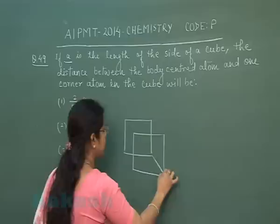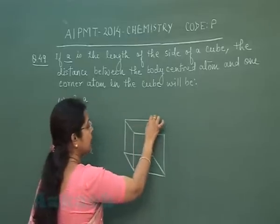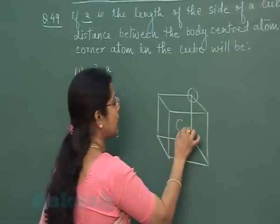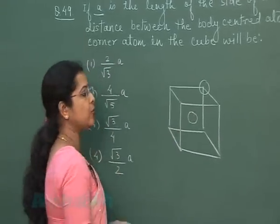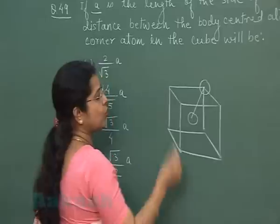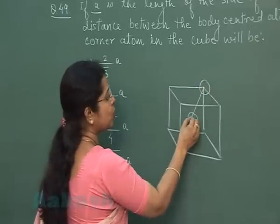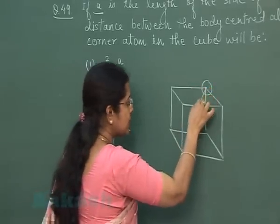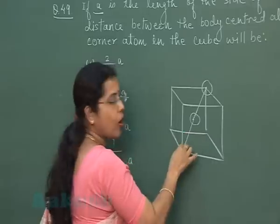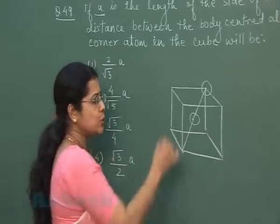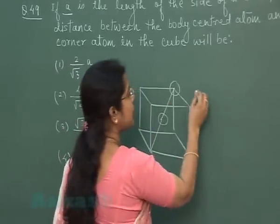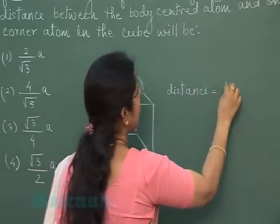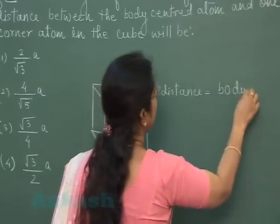According to the question, the atoms are present at the corner as well as at the body center. It means we have to find out the distance from a corner atom to a body center atom. Now you can see this distance is half of the body diagonal. So we have to find out the distance which is half of the body diagonal.